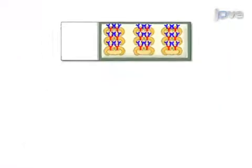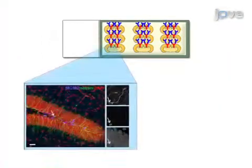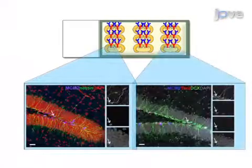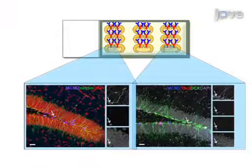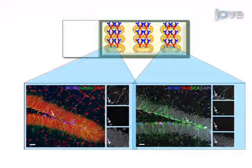The final step is to perform secondary antibody staining on the tissue the next day for at least two hours. Ultimately, visualize the various progenitor cell types across the various stages of development during adult neurogenesis of the hippocampal tissue with time-lapse or confocal microscopy.